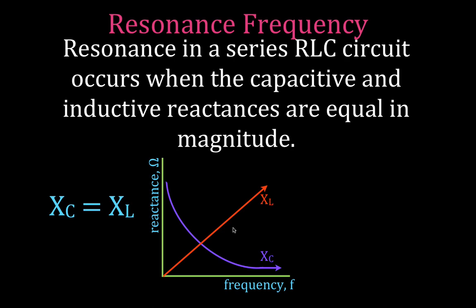So at some point for a given circuit, those two values are going to be equal to each other. And that occurs where those two curves intersect. And that means that the inductive and the capacitive reactance will be equal. And that will be for a given frequency in our circuit when the capacitive and inductive reactances are equal for a single frequency.